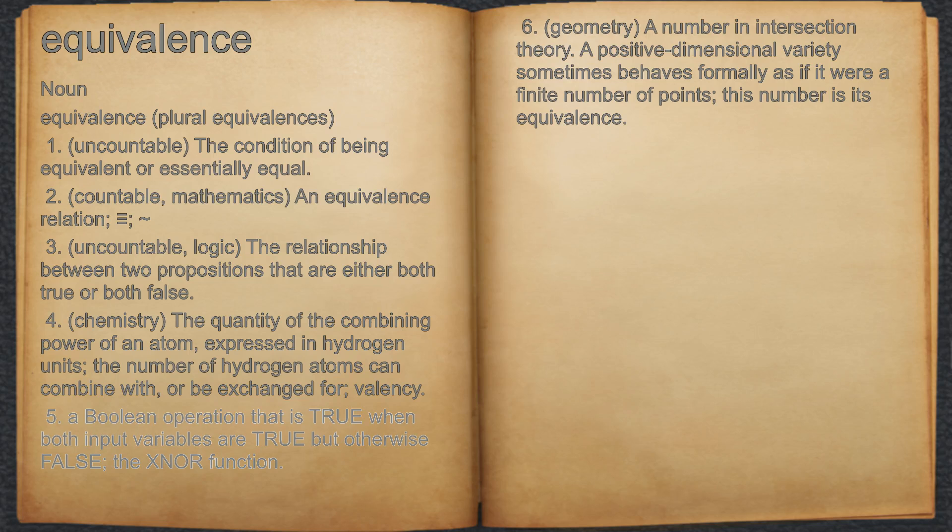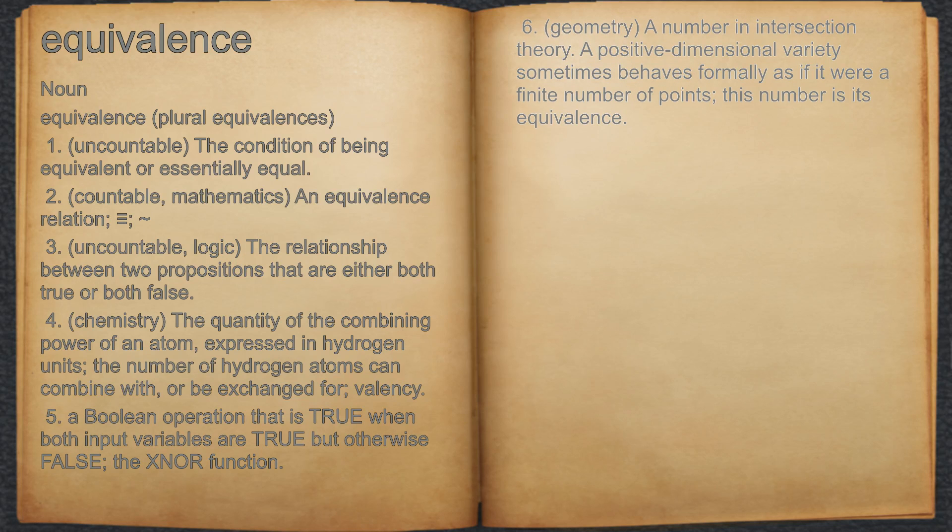5. A Boolean operation that is true when both input variables are true but otherwise false; the XNOR function.